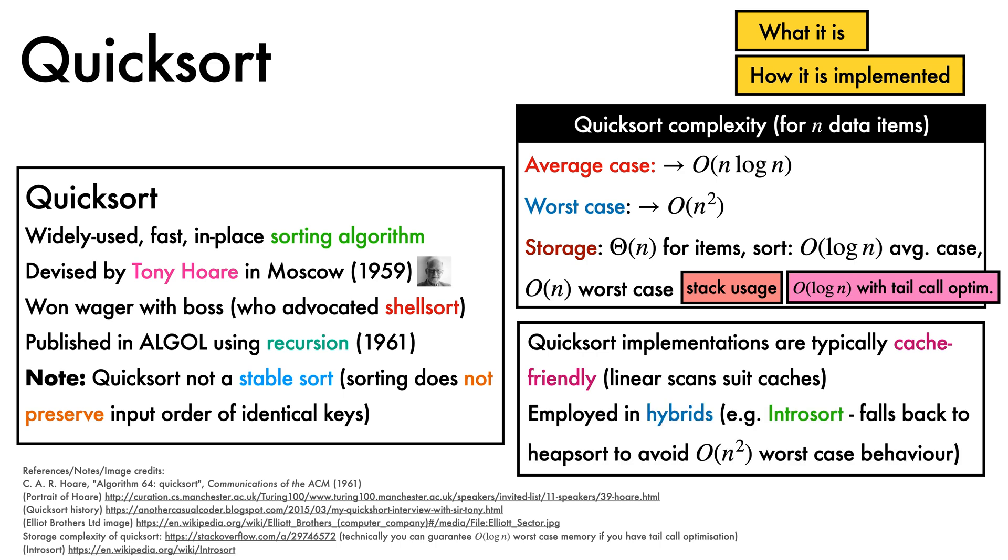Quicksort is particularly widely used in hybrid algorithms like Introsort, which starts out with Quicksort, but falls back to Heapsort to avoid the big O of n squared worst case behavior of Quicksort.